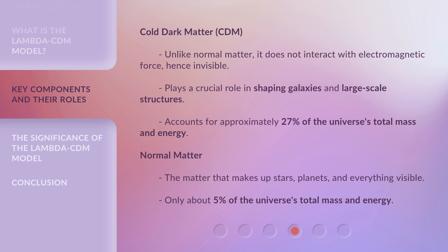Normal matter — the matter that makes up stars, planets, and everything visible — accounts for only about 5% of the universe's total mass and energy.